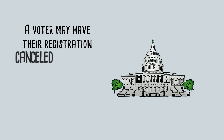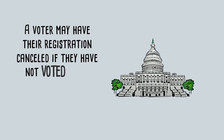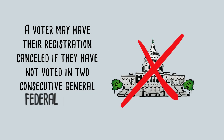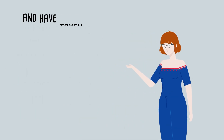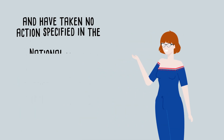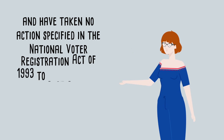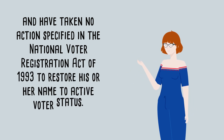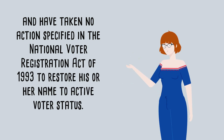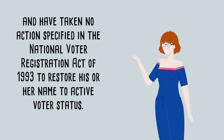A voter may have their registration canceled if they have not voted in two consecutive general federal elections and have taken no action specified in the National Voter Registration Act of 1993 to restore his or her name to active voter status.